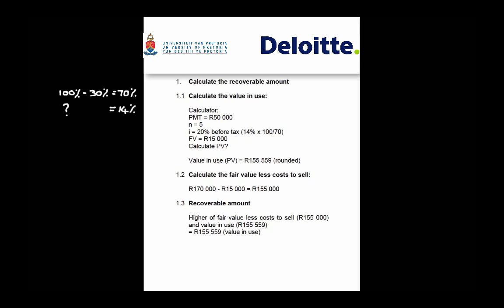Assuming you have indications of impairment, you now need to test for impairment. This involves calculating a recoverable amount and comparing it to the carrying amount of the asset in the books before any impairment loss. The recoverable amount is the higher of value in use or fair value less cost to sell. You need to calculate both to determine which is higher, and that higher amount represents your recoverable amount to compare to your carrying amount.